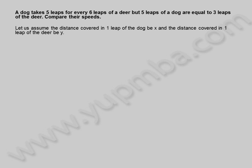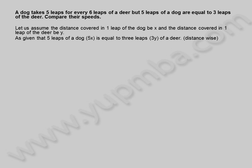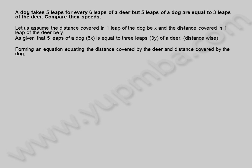Let us assume the distance covered in 1 leap of the dog be x, and the distance covered in 1 leap of the deer be y. As given that 5 leaps of a dog, 5x, is equal to 3 leaps, 3y, of a deer — distance wise. Forming an equation equating the distance covered by the deer and the dog: 5x is equal to 3y.